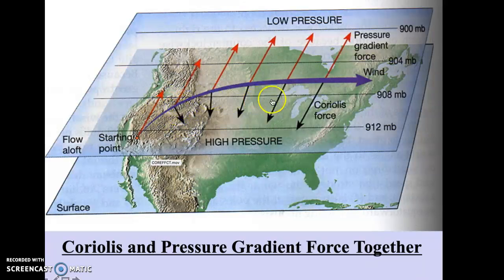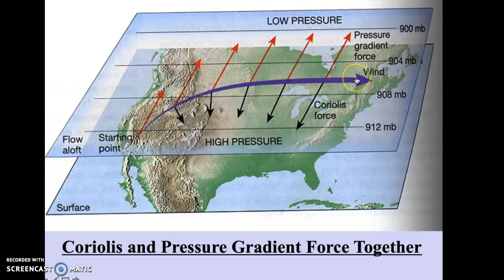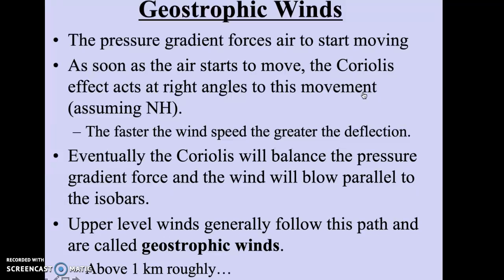And eventually, over a long period of time, those two forces are going to balance each other out. And because you've only got two forces, you will have a wind moving parallel to the isobars. Because in the northern hemisphere the Coriolis force is forcing things to the right, and in the southern hemisphere to the left, the pressure gradient force and Coriolis force balance, and the wind ends up going to the right of the initial pressure gradient force. These are called geostrophic winds.